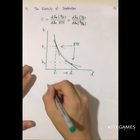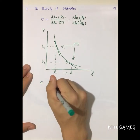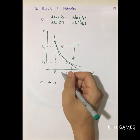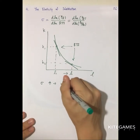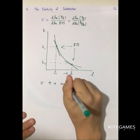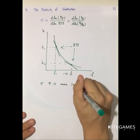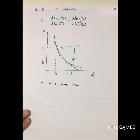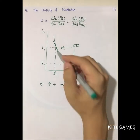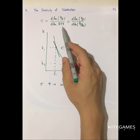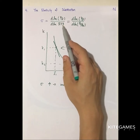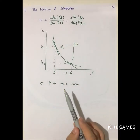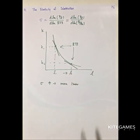If the elasticity of substitution is higher, that means the isoquant will be more linear. Because higher elasticity means d log(RTS) is smaller — that means the change in the slope is smaller, so the isoquant is more linear.